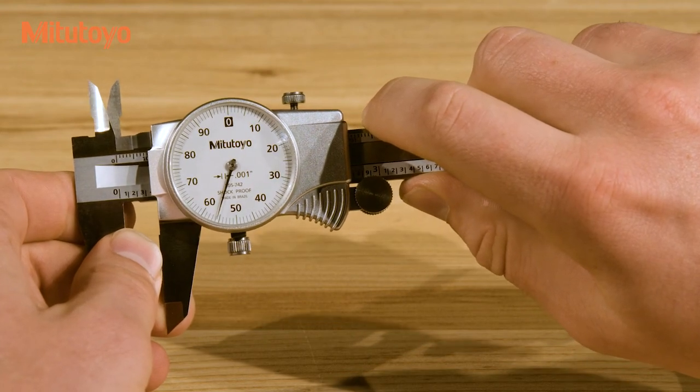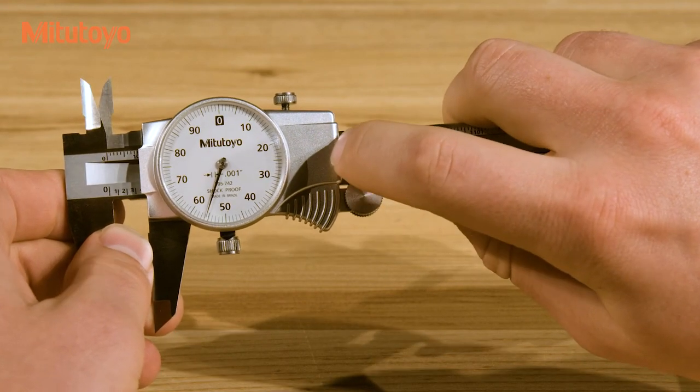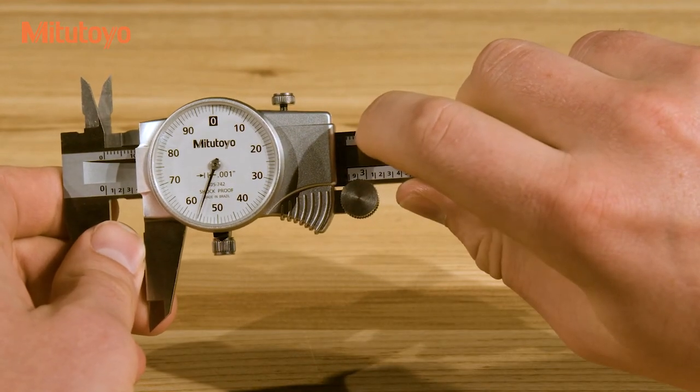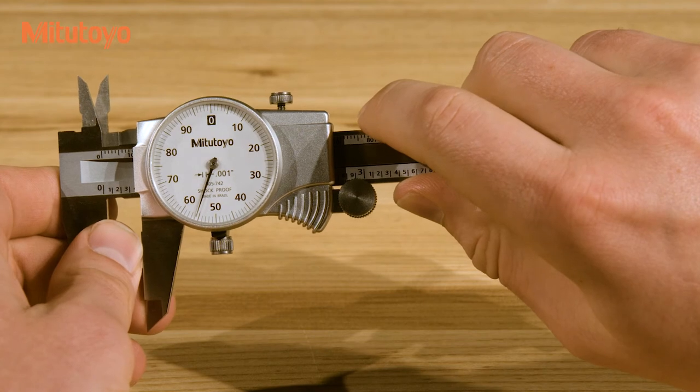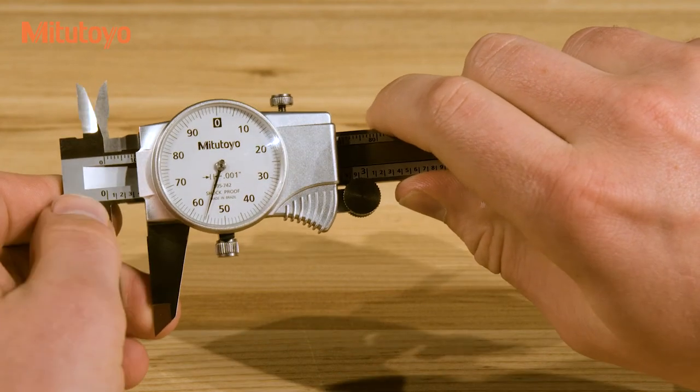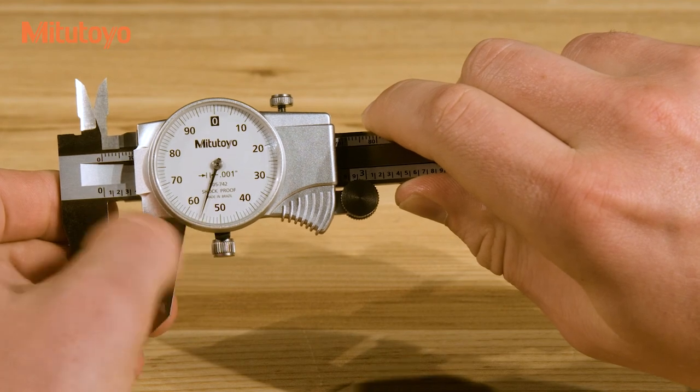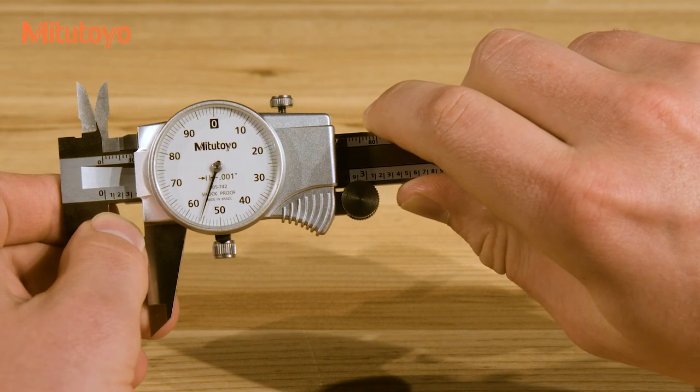Next, look at the dial and determine which number the hand is pointing at. In this case, it's pointed at 56, so that's .056 inches. The final reading is the sum of these two readings, so that's 0.3 and .056 for a final reading of .356 inches.